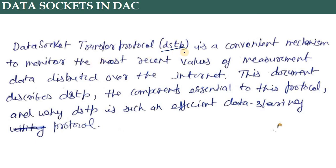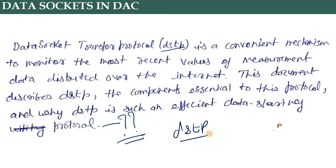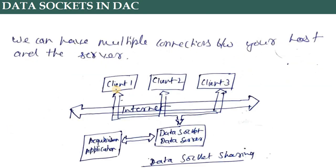Data sockets use DSTP, which is a very convenient mechanism for this protocol. DSTP is an efficient data sharing protocol — for your knowledge you can learn more about DSTP. Through the internet bus, multiple clients are connected — the clients here are sensors S1, S2, S3 — connected through the data socket to the acquisition applications.